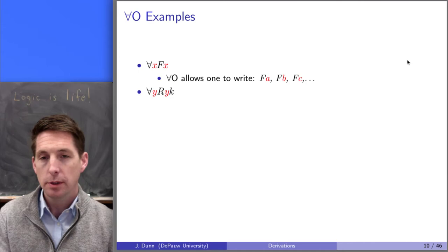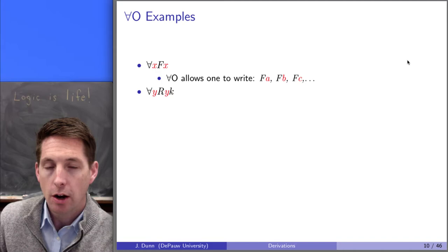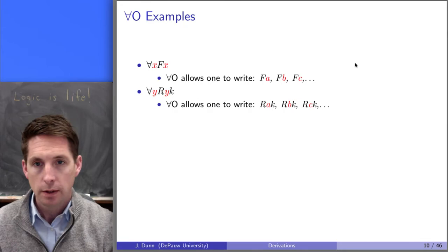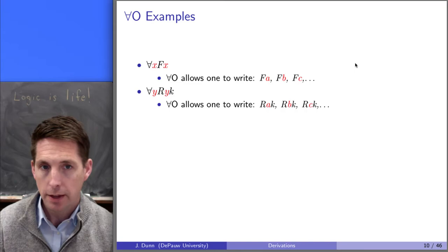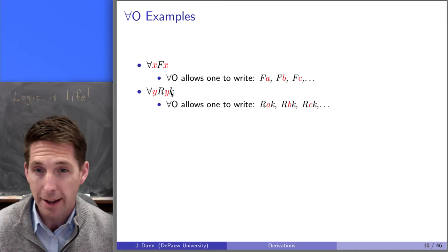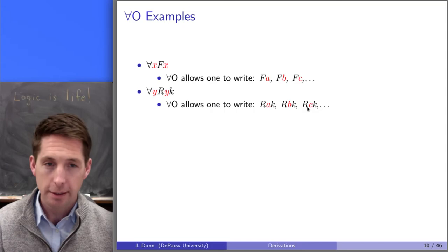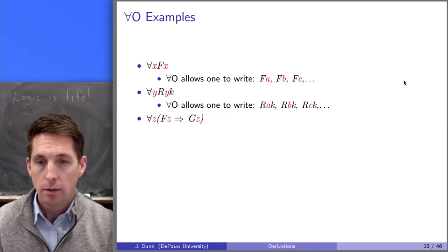Let's look at some more examples. Suppose we had a formula that says every y bears the R relation to some individual k. Again, we can strip off the quantifier and replace the bound variable y with a constant — so we could write R(a,k), R(b,k), R(c,k). The way to think about this: if R is the love relation and k is some person, then if you know everyone loves k, you know Aaron loves k, Betsy loves k, Chris loves k, and so on.